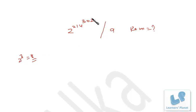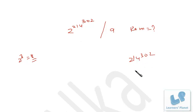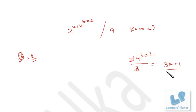What we do is try to convert this entire expression into multiples of 8, or powers of 8. For that, consider 214 raised to 302 — I need a factor of 3 here. If 214 is divided by 3, the remainder is 1, so 214 is in 3k+1 format. That means 2 raised to (214^302) can be converted to 2 raised to (3k+1) format.